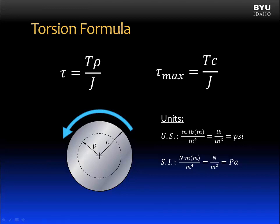We often see the torsion formula shown in two forms. The form on the left is the form we were just talking about. The form on the right shows rho as C. And this is the form used for calculating the maximum shear stress, tau. Let's look at it.